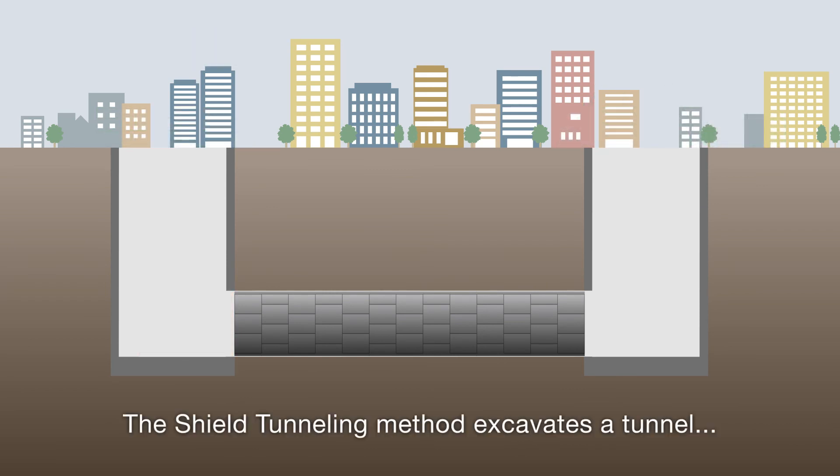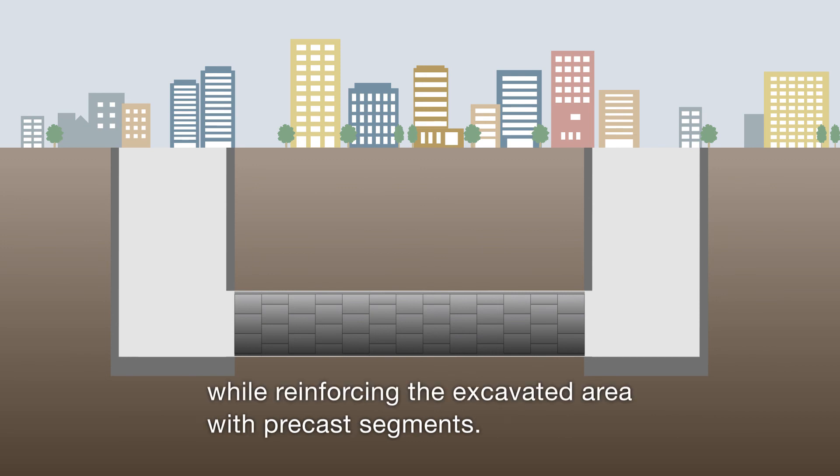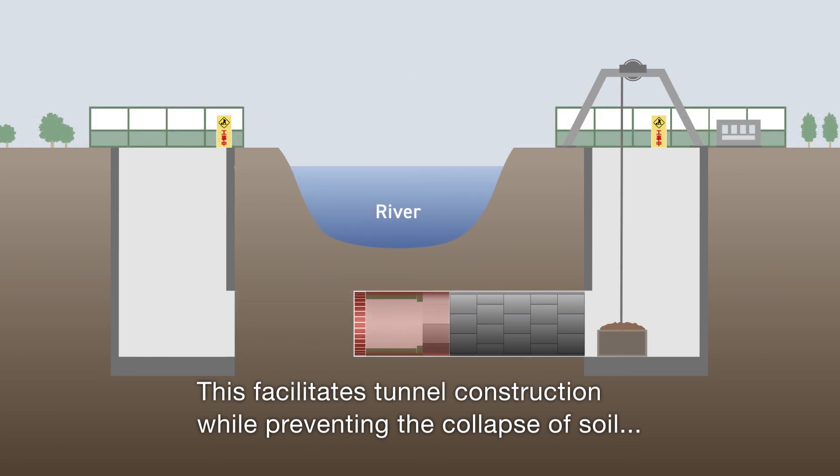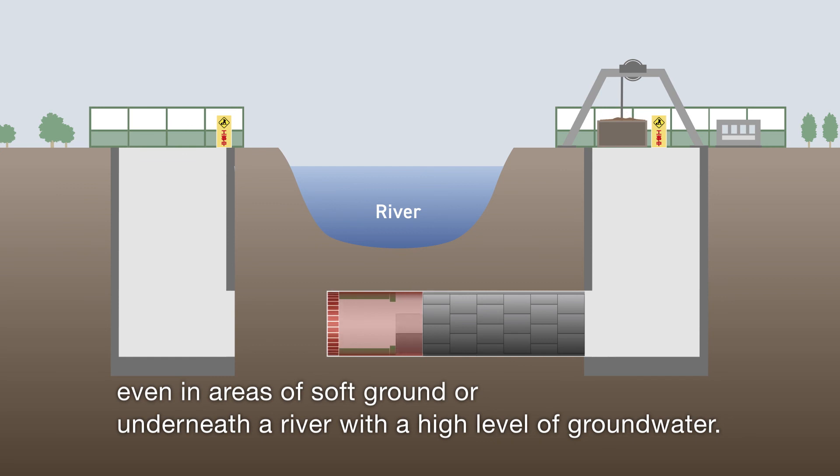The shield tunneling method excavates a tunnel while reinforcing the excavated area with precast segments. This facilitates tunnel construction while preventing the collapse of soil, even in areas of soft ground or underneath a river with a high level of groundwater.